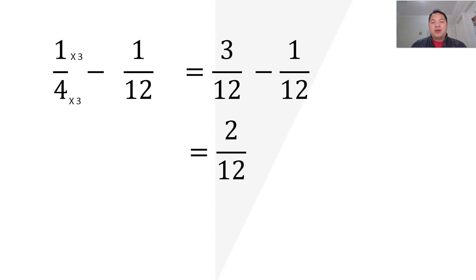That's how I get 3/12 minus 1/12. 3 minus 1, you get 2. That's how I get 2/12. And both numbers can be divided by 2. That's how I get 1/6.